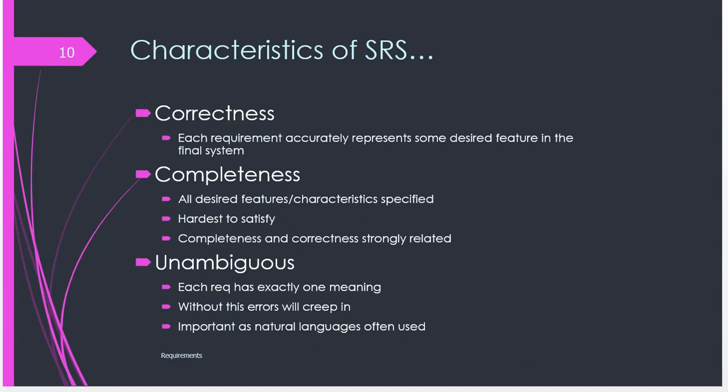The SRS has certain characteristics. Firstly, it should be correct — each requirement should accurately represent some desired feature in the final system. The SRS is basically taking the user requirement and translating it into a feature in the system, thereby maintaining the correctness of the translation from requirement to feature.